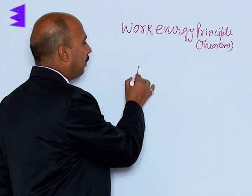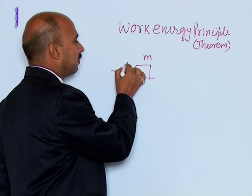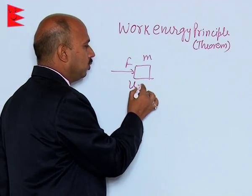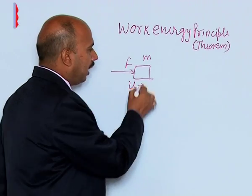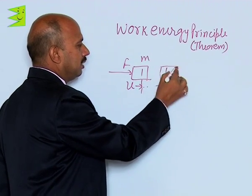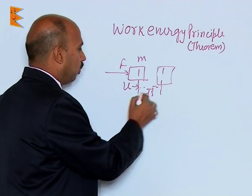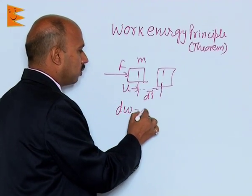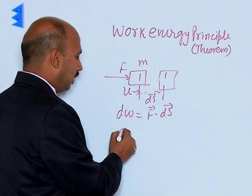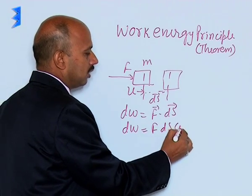See here, suppose you have taken a body here of mass m. You are applying force f, body is moving with initial speed u to this direction. As you apply force f and there is a small displacement ds, then we can write work done by the force is equal to f dot ds. And we can write dw is equal to f ds cos theta.